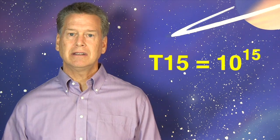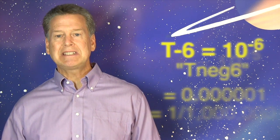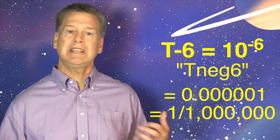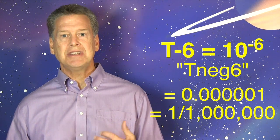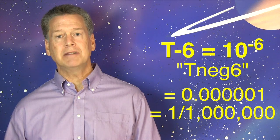So T15 is 10 to the fifteenth power, a quadrillion, and T-6, read T neg 6, is 10 to the negative sixth power, that is one millionth, one divided by a million.